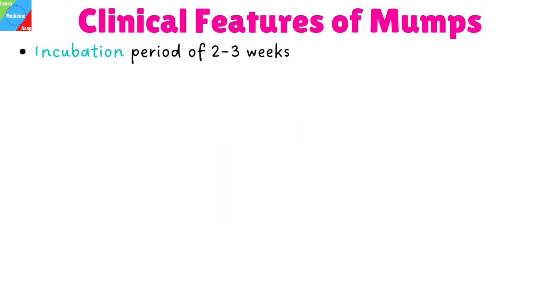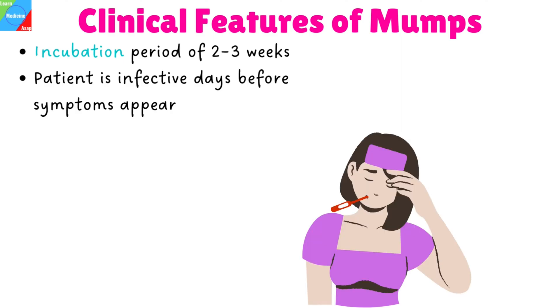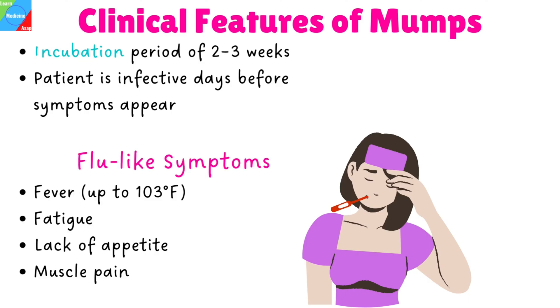Now let's look at the clinical features of mumps. Mumps has an incubation period of two to three weeks. The patient is infective days before symptoms appear and remains so seven to ten days after gland swelling reduces. Flu-like symptoms appear first and they include fever, fatigue, lack of appetite, and muscle pain.